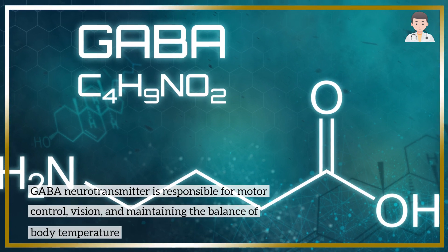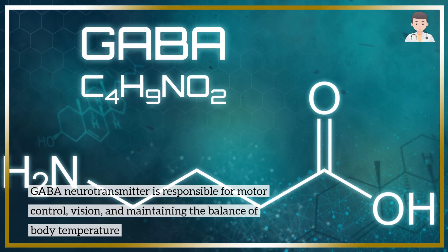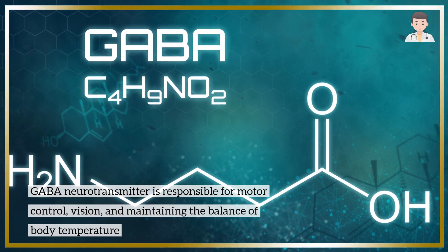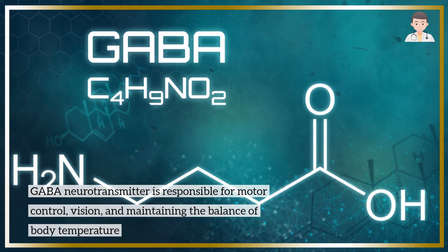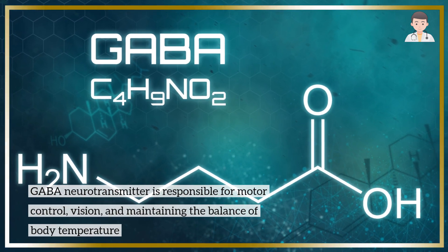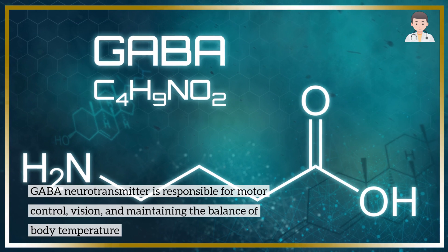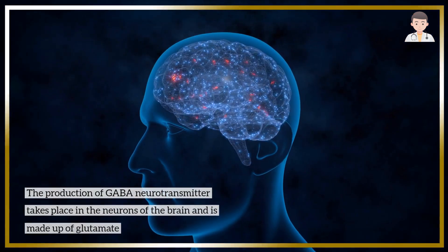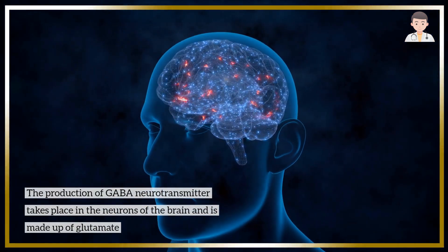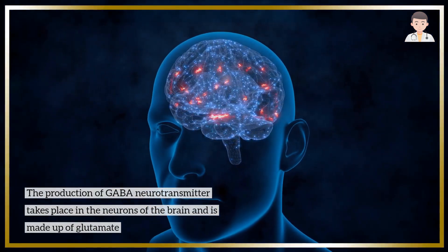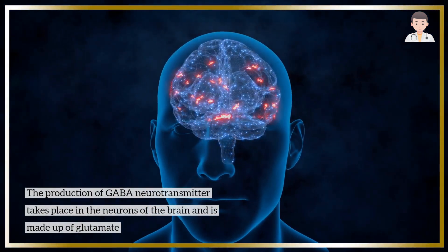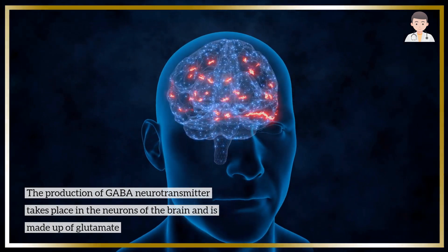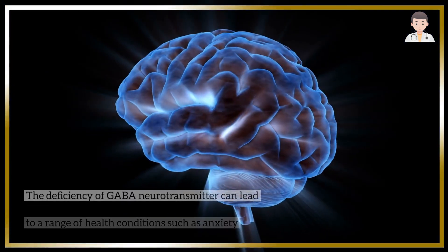GABA is responsible for motor control, vision, and maintaining the balance of body temperature. The production of GABA takes place in the neurons of the brain and is made up of glutamate.